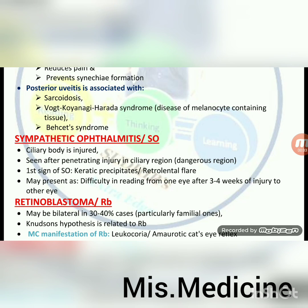Sympathetic ophthalmitis (SO): ciliary body is injured; seen after penetrating injury in ciliary region — very dangerous area. First sign of sympathetic ophthalmitis is Dalen-Fuchs nodules or retrolental flare. May present as difficulty in reading from one eye after 3–4 weeks of injury to the other eye.